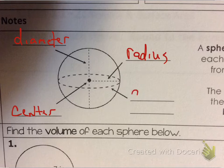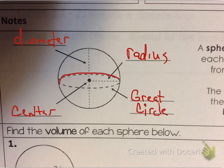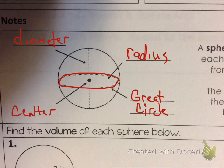What makes spheres unique is they have what is called a great circle. The great circle sounds like it should be some type of sci-fi thing, but the great circle is basically the circle that slices the sphere into two equal hemispheres. It is the circle that's going to have the largest area of a sphere.